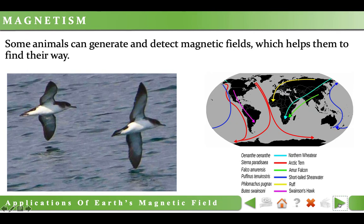Some animals, like African elephants, monarch butterflies, pigeons and so on, can generate and detect magnetic fields, which helps them to find their way. On the right hand image, you can see the routes of some of these animals.